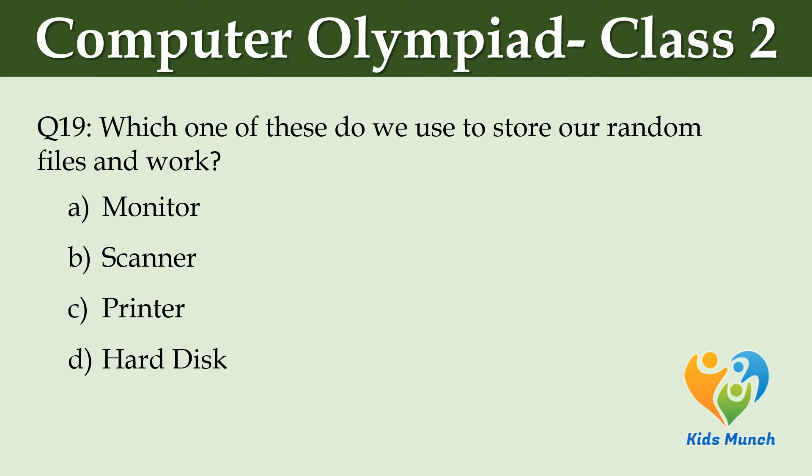Which one of these do we use to store our random files and work? Option A: Monitor. Option B: Scanner. Option C: Printer. Option D: Hard Disk.